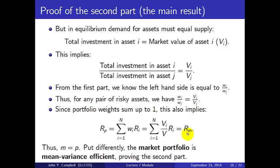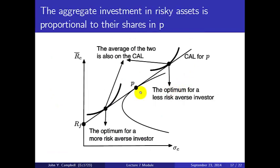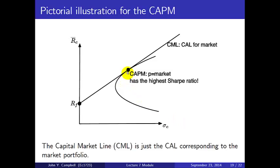Put another way, portfolio p actually is the market. The model tells us that the market portfolio plots exactly on the efficient frontier and is mean-variance efficient — in fact, it is the unique portfolio containing only risky assets that is mean-variance efficient. The CAPM says that portfolio p, which is the same as the market, has the highest available Sharpe ratio. We draw the capital market line connecting the safe asset to the market portfolio, and all investors will invest on that line.